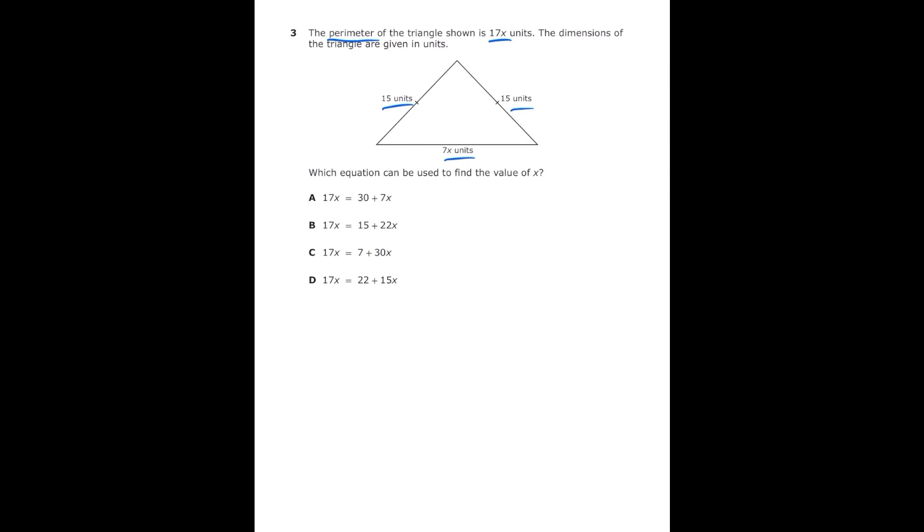And so I'm just going to go ahead and add up all three sides and set it equal to the perimeter which is 17x. So I'm going to have 15 plus 15 plus 7x is equal to 17x. Then I'm going to combine like terms and get 30 plus 7x is equal to 17x. And if I look at my answer choices I can see that letter A is the correct answer.